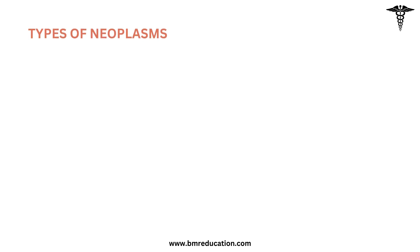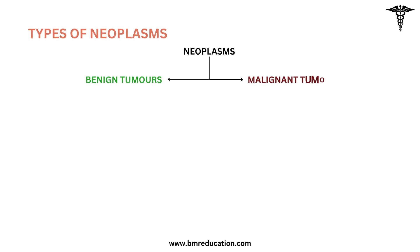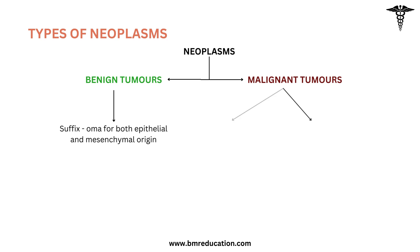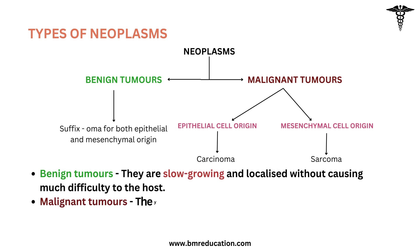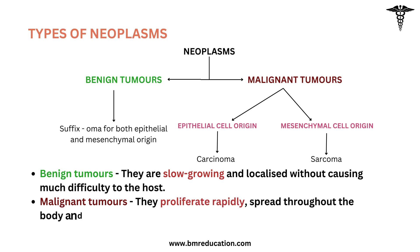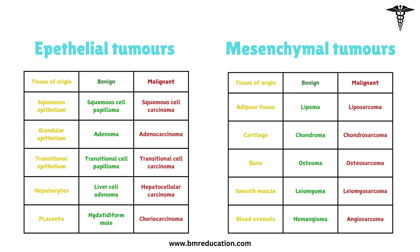There are two types of tumors: benign tumors and malignant tumors. Benign tumors end with the suffix -oma, of either epithelial or mesenchymal origin, while malignant tumors of epithelial origin are called carcinomas and malignant mesenchymal tumors are called sarcomas. However, some cancers are composed of highly undifferentiated cells and are referred to as undifferentiated malignant tumors. Benign tumors are slow-growing and localized without causing much difficulty to the host, while malignant tumors proliferate rapidly, spread throughout the body, and may eventually cause death of the host.